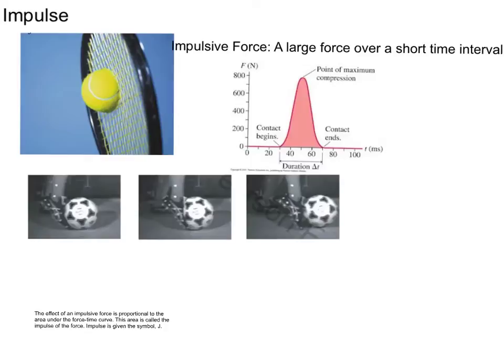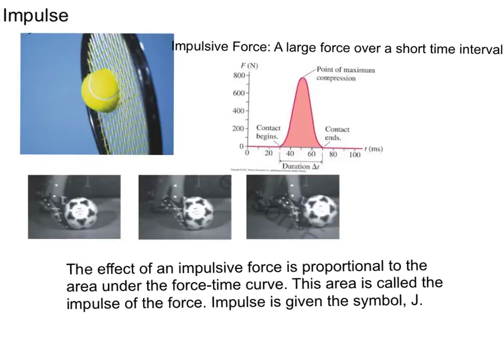So, we can say that the effect of an impulsive force is proportional to the area under that force-time curve. This area is called the impulse of the force. An impulse is given the symbol J. I know that totally makes sense that it would be given a symbol J, but that's what it is.